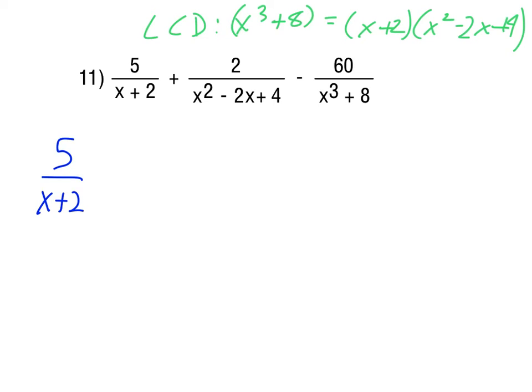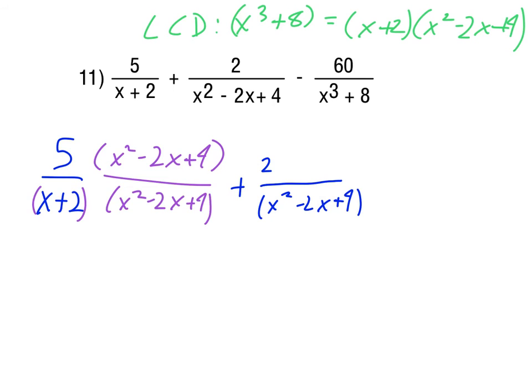So, I think I'll just leave this 60 alone since it already has the LCD. Again, the x cubed plus 8 is the same as the product of those two factors. The 5 over x plus 2, though, has the x plus 2, but not the x squared minus 2x plus 4. So, I would multiply top and bottom by that, and, of course, on the bottom we won't really do any multiplying. And then we have the plus 2, and, again, that already has the denominator x squared minus 2x plus 4. So, that is missing the x plus 2. So, multiply top and bottom by that.